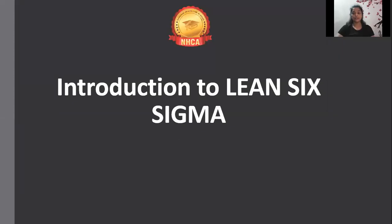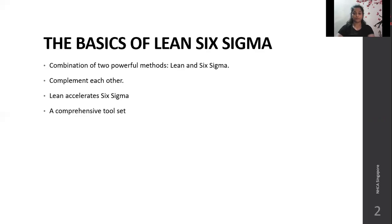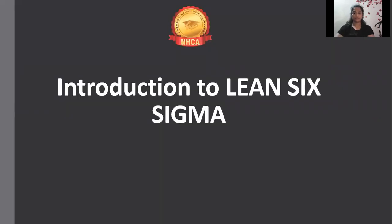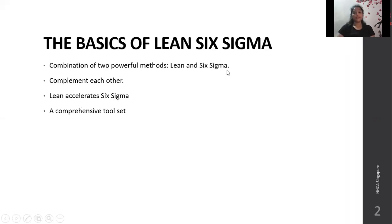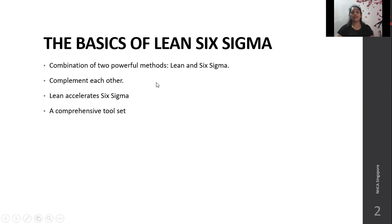Introduction to Lean Six Sigma. The basics of Lean Six Sigma. Lean Six Sigma is a combination of two powerful methods: Lean and Six Sigma. They complement each other. Lean accelerates Six Sigma, and both of them together they are a comprehensive toolset.